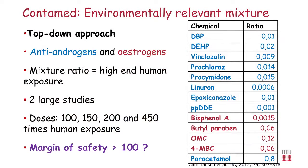We then pursued a different approach: an environmentally relevant mixture. Rather than taking extreme selections, we tried to make a mixture similar to what humans can actually be exposed to — a top-down approach. The mixture included many endocrine disruptors: anti-androgens (blue) and estrogens (red). The mixture ratio was based on high-end human exposure — around the 90th to 95th percentile — from literature values at the time of study design. The doses used were 100, 150, 200, and 450 times human exposure.